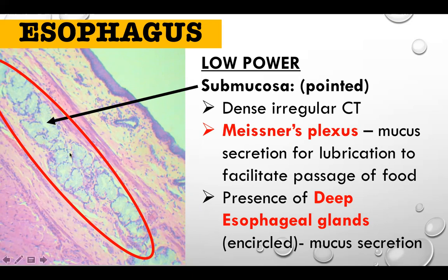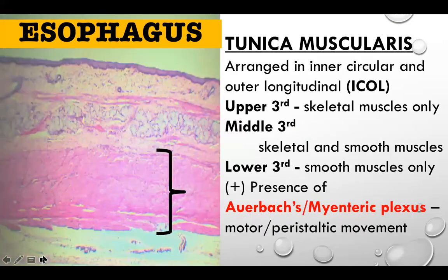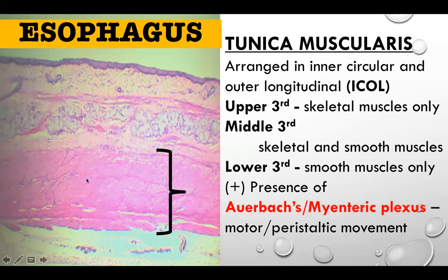The third layer is the tunica muscularis, indicated by this bracket. They are arranged in inner circular and outer longitudinal — ICOL. A common exam question is to identify the lining epithelium as stratified squamous, and recognize the deep esophageal glands, confirming this is the esophagus.